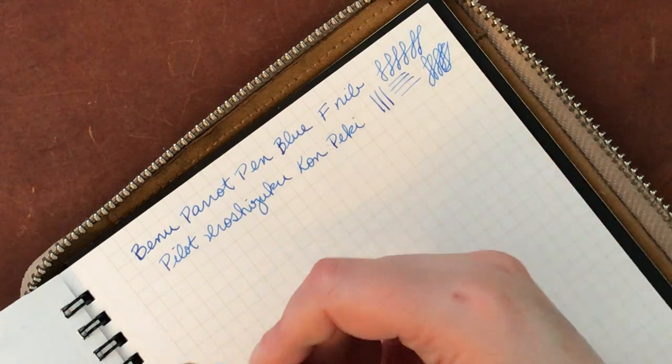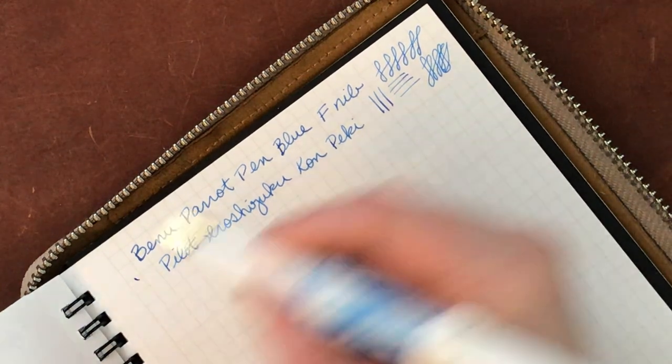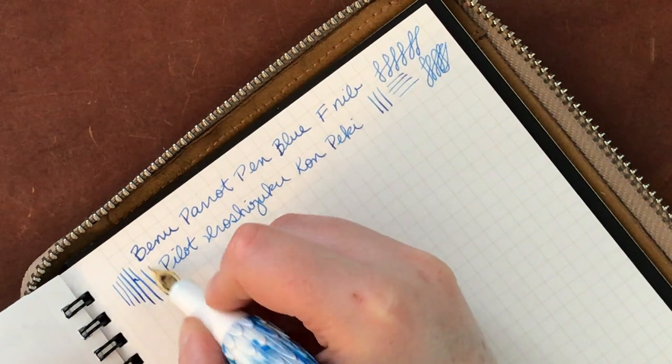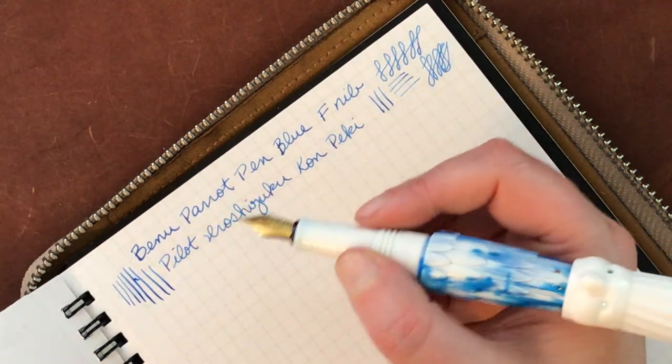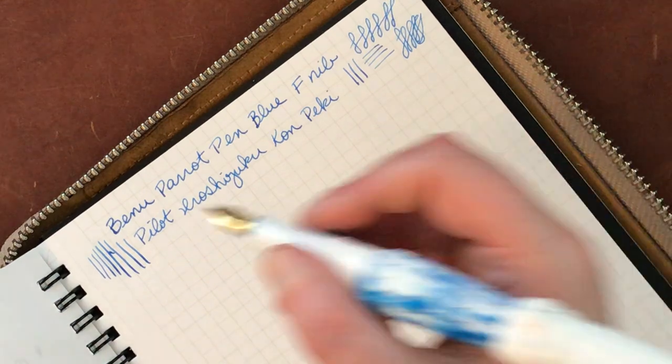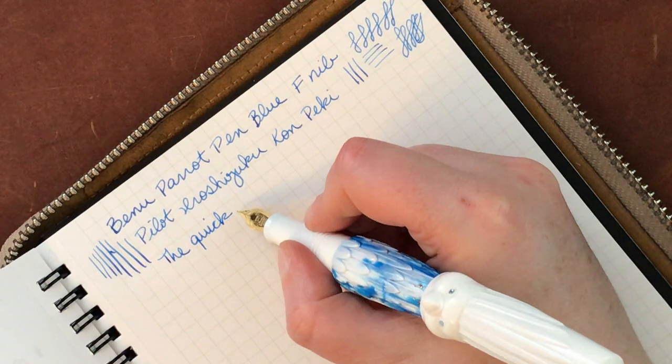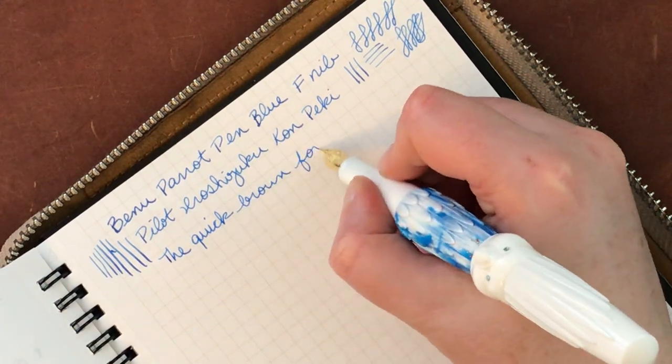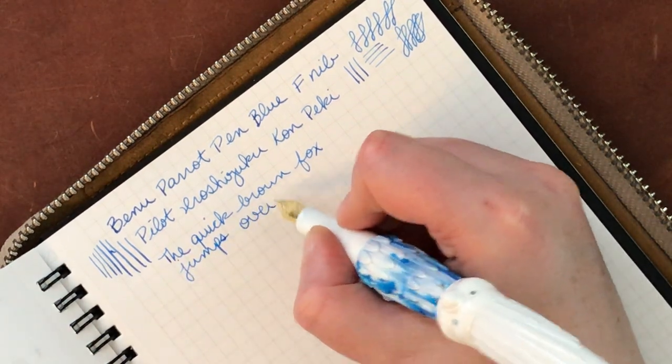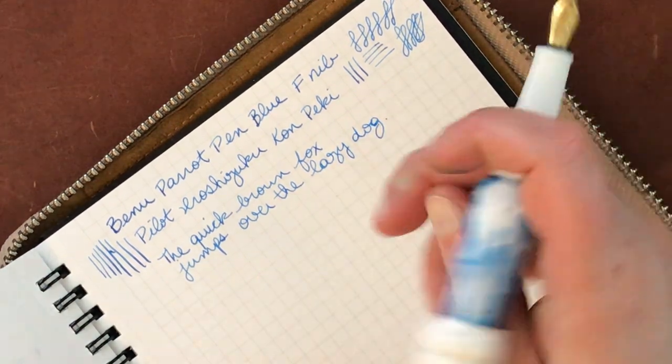I kind of like the amount of feedback that this gives me. It's not super stiff. So there's a little bit of, you probably could get a little bit of line variation by pressing. The Schmidt nibs tend to be very flexible, which is part of what I like about them. So then we're going to write, let's move this up just a tiny bit. The Quick Brown Fox jumps over the Lazy Dog.